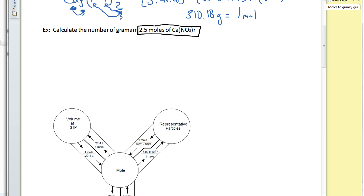That's my known value. And so I'm going to write a long line like this and I'm going to put my known value here. 2.5 moles of calcium nitrate. Just like that.